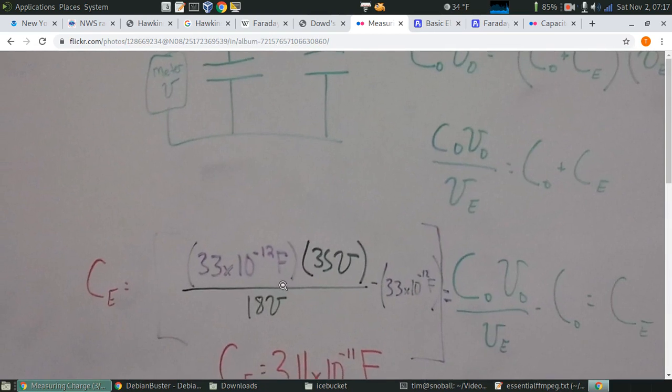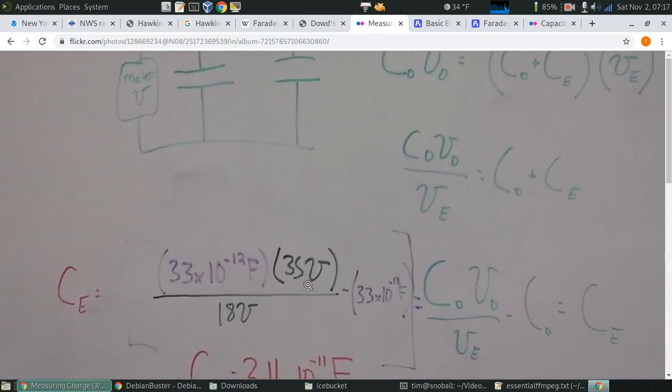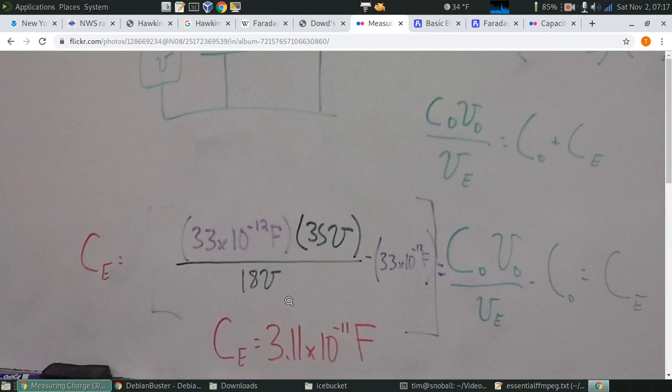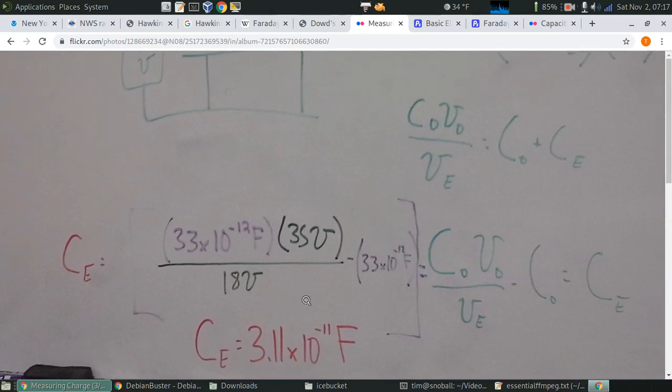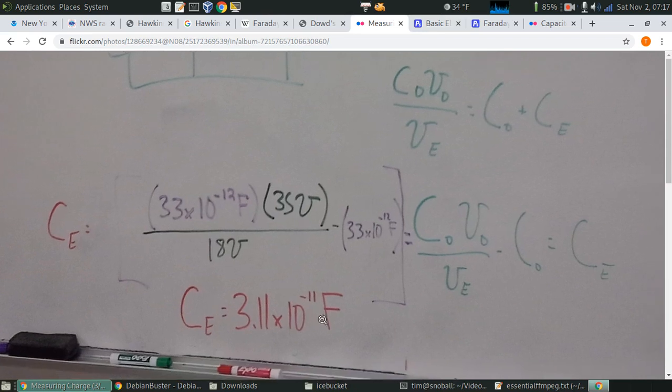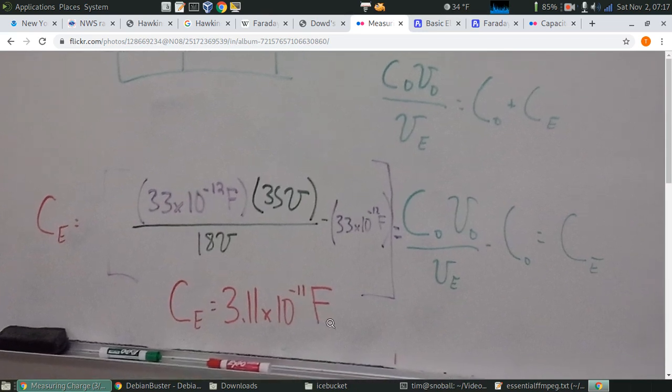We've got our known capacitor. We've got the 35 volts we charged it with. We've got the 18 volts the meter read. And when you solve all that out, you get 3.11 times 10 to the negative 11th Farads.